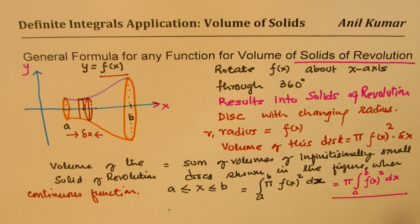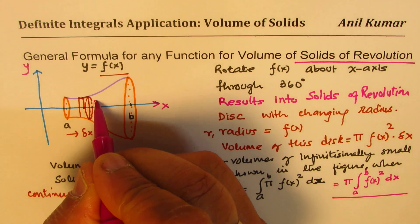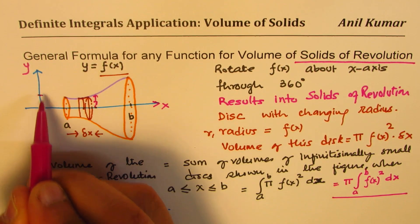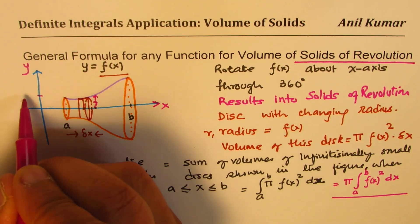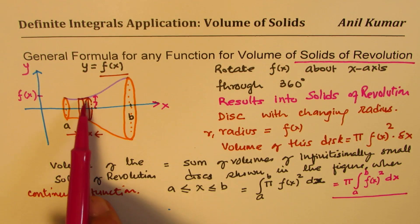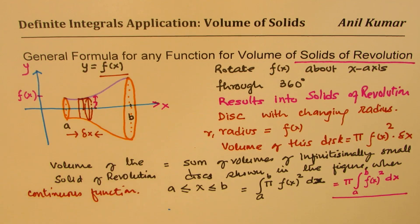So we get our general formula here for any solid of revolution. Once again, we have these disks whose radius r is the same as f of x. For any function at any point this will be f of x. So the volume of each disc added as the value of x changes from a to b gives us the total volume.